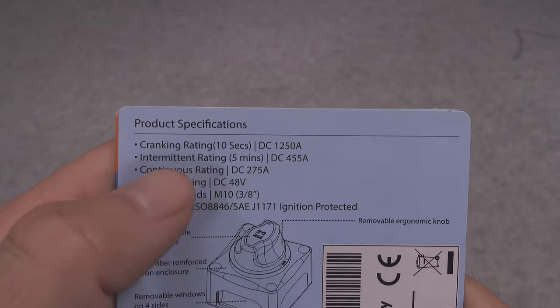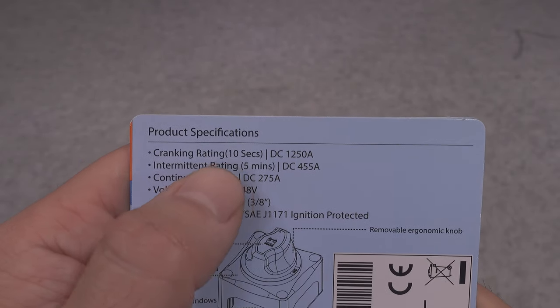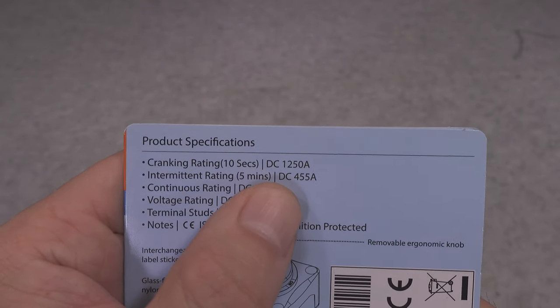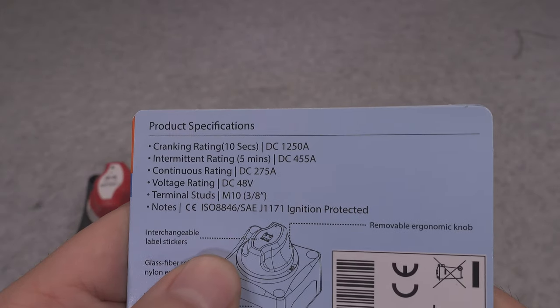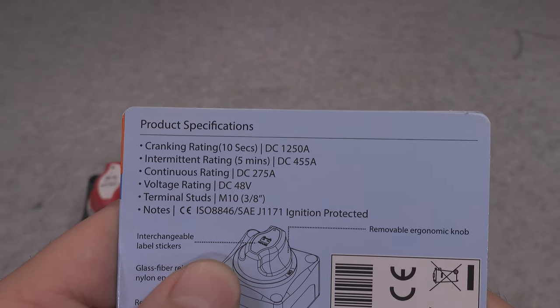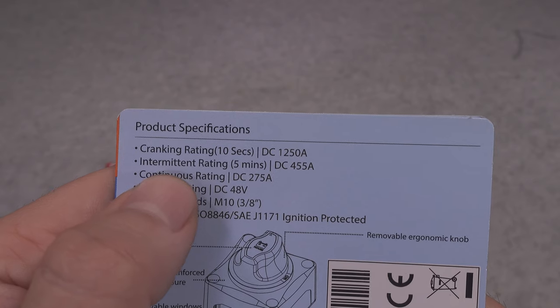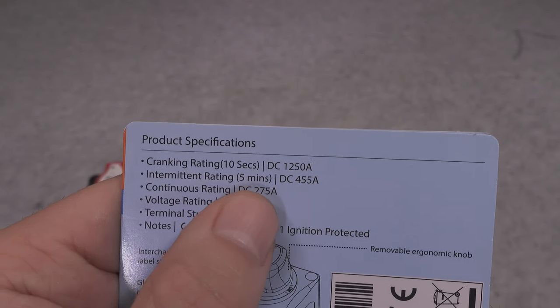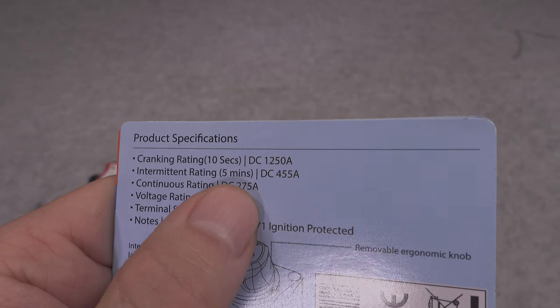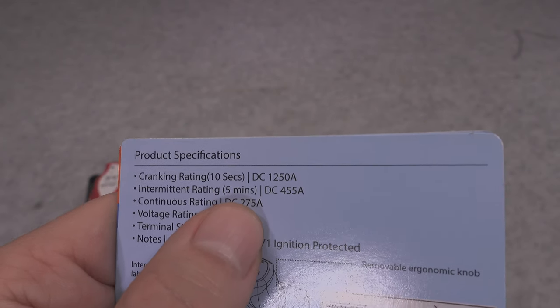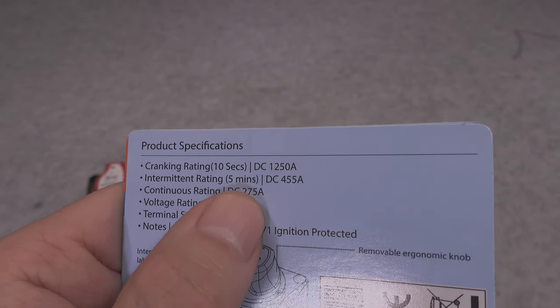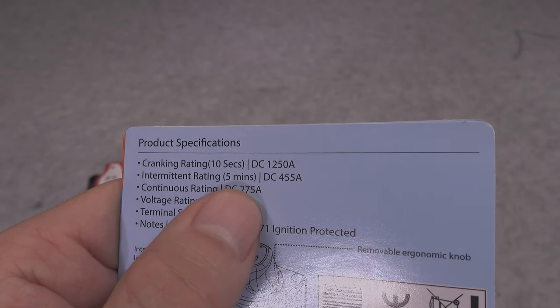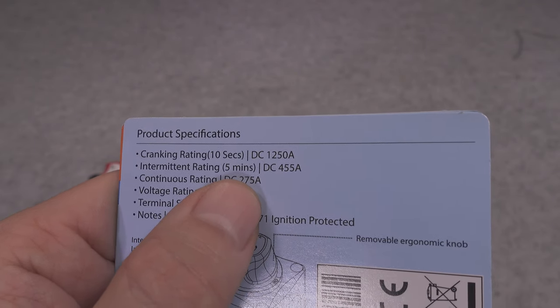Now let's quickly browse through all the ratings. First we've got a cranking rating up to 10 seconds, and as you can see it can peak up over 1000 amps. Then we've got the intermittent rating that can go up to five minutes and we can use 455 amps, which is absolutely crazy high value.